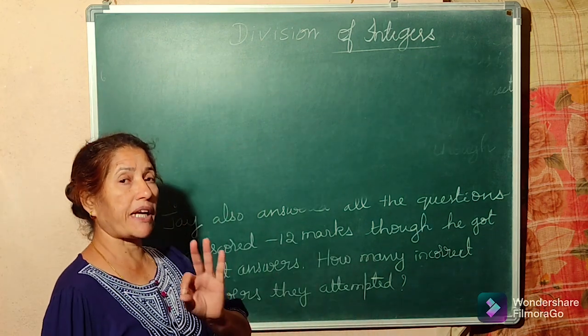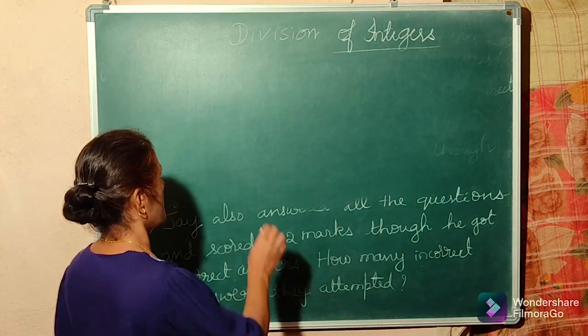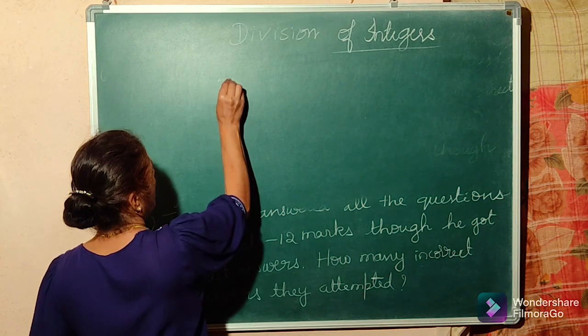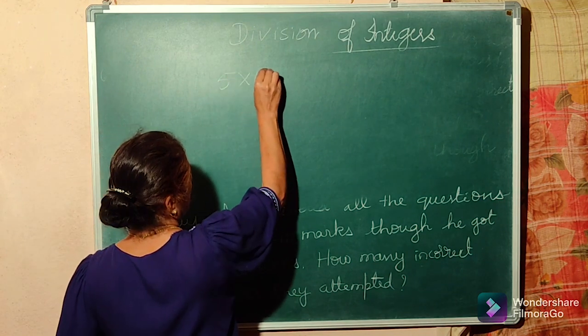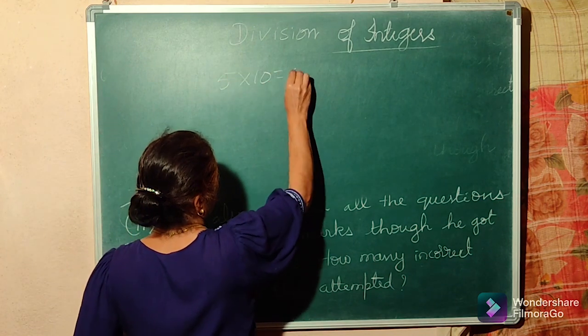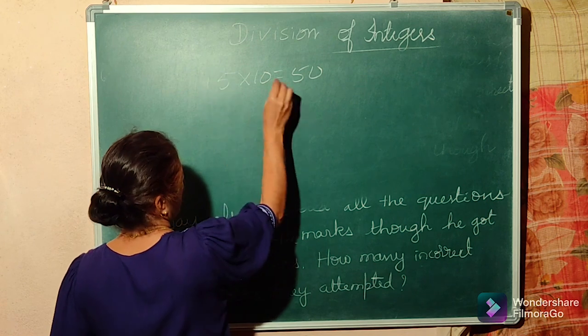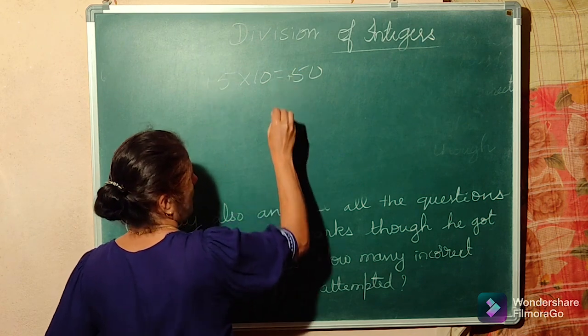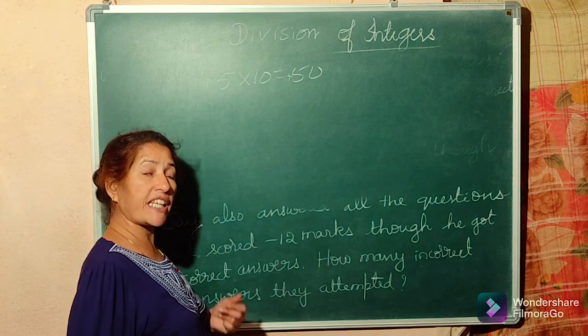Radhika attempted 10 correct answers. So, 5 multiplied by 10 — how much? 50 marks. So plus 5 into 10, that is plus 50 marks she got for correct answers. But what is her total?